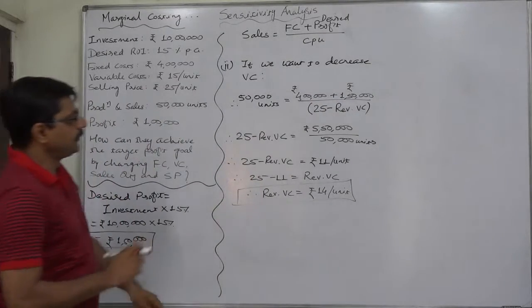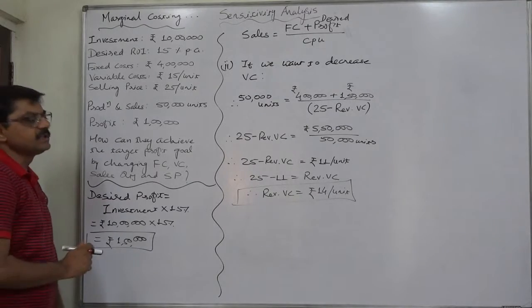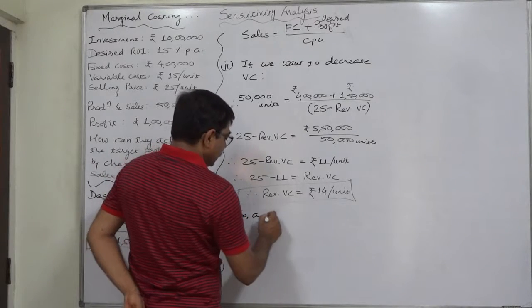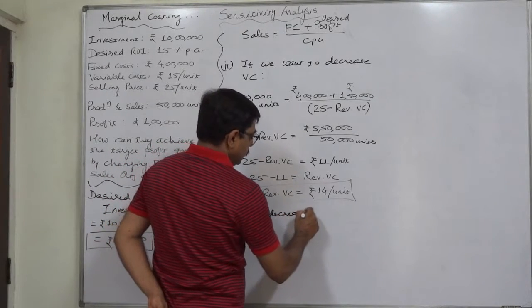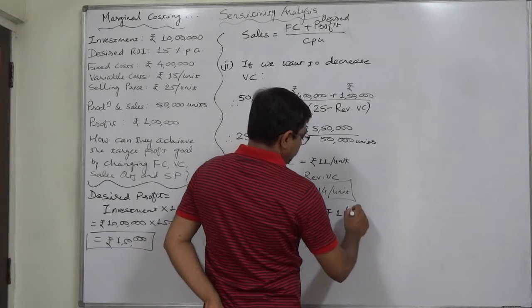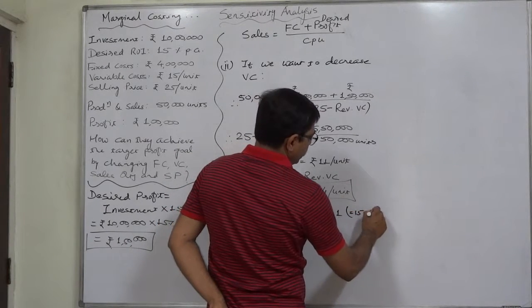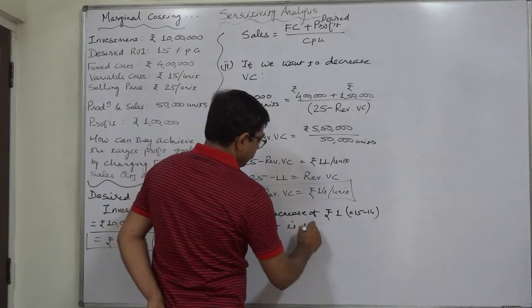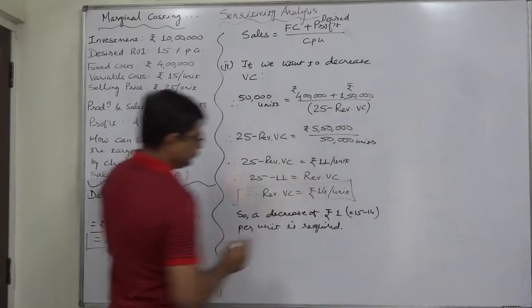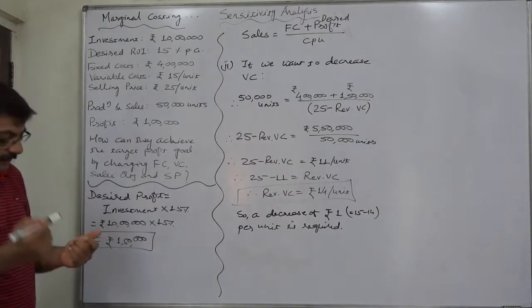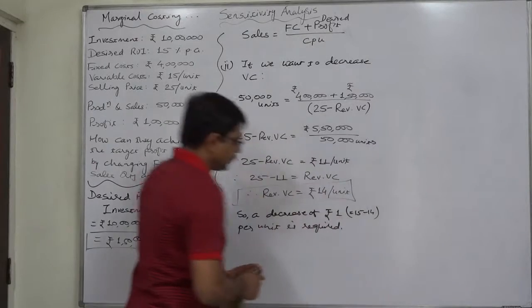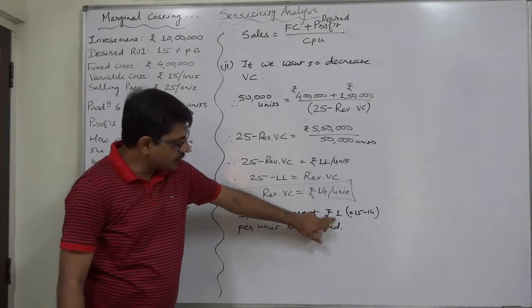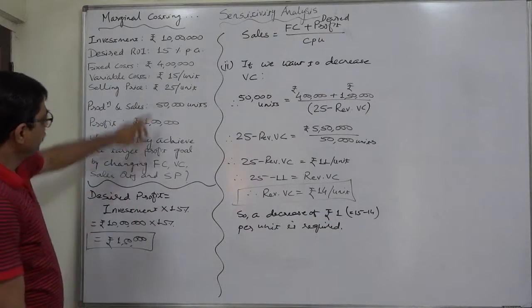Without changing the sales quantity or selling price or the fixed cost, a decrease of ₹1, that is 15 minus 14 per unit, is required. And we can reconcile that if we reduce or succeed in reducing variable cost by ₹1 and selling price remaining 25 without any change, now the contribution per unit will increase from ₹10 to ₹11.